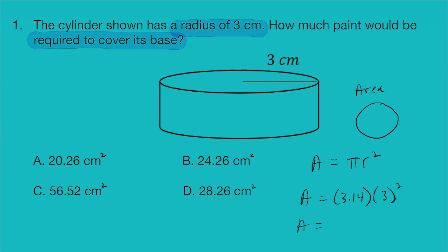You do get to use a calculator on this exam. So make sure you're plugging this into your calculator. And we get a correct answer here of 28.26 centimeters squared. So the correct answer is option D.